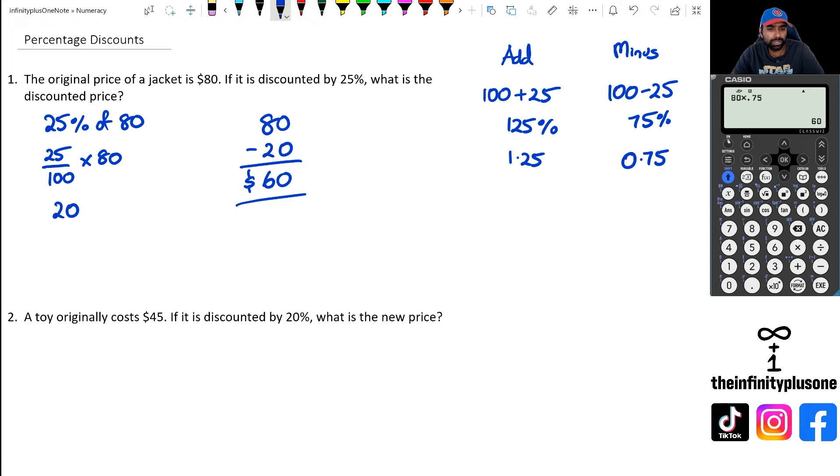So let's have a look at question number two. We've got $45 the toy is costing, and it's discounted by 20%. So we're going to go 100 take away 20, which means I've only got 80% of the price left. And if I go 80% of 45, that's 0.8, that's what 80% is, times 45. That's going to give me a price of $36.